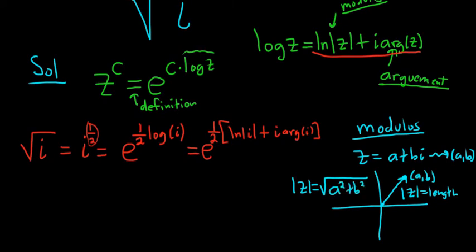So in this case, we have the modulus of i. This is equal to 0 plus 1 times i. This is equal to the square root of 0 squared plus 1 squared, which is the square root of 1, so it's 1. So the modulus of i is 1.